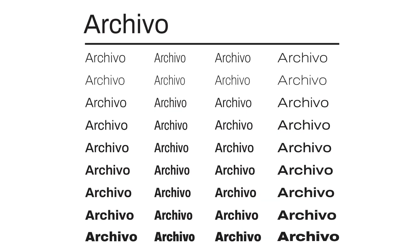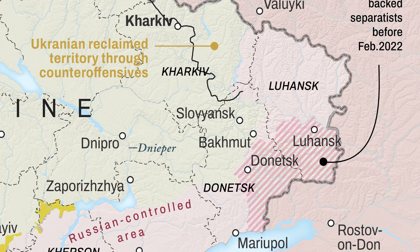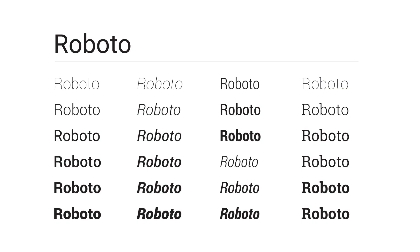Archivo is an excellent typeface family with a wide range of weights and widths — a great free substitute for Helvetica Condensed. Roboto is a good alternative to Helvetica and comes in both regular and condensed widths. There's also a nice slab version.